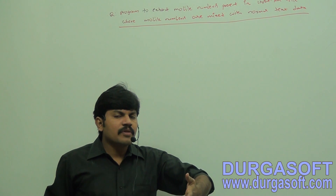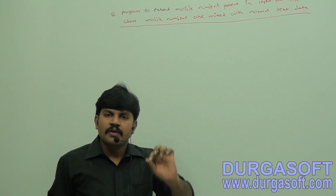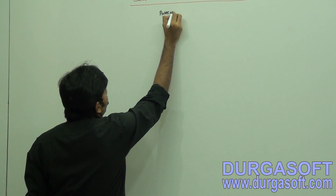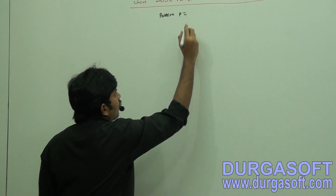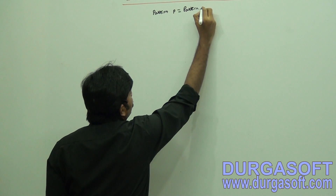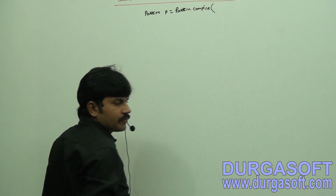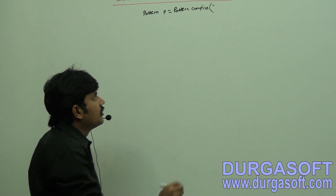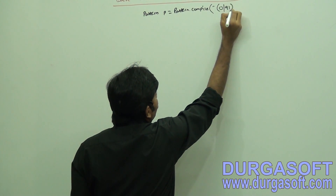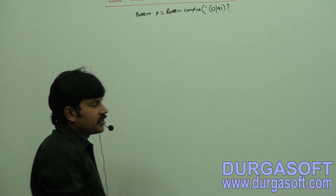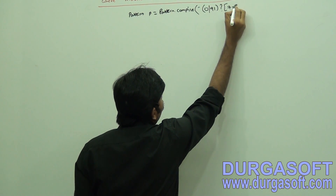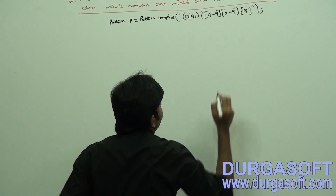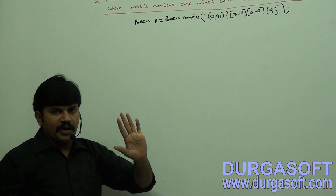We are searching for the mobile number pattern. Create a pattern object to represent mobile number: Pattern p = Pattern.compile(). The mobile number regular expression is: [0|9][1]? [7-9][0-9]{9}. We used this same regular expression in the last example too. I've created the pattern object.